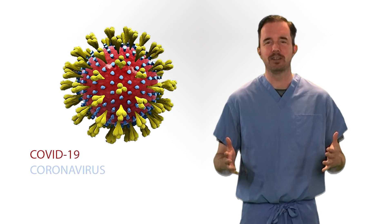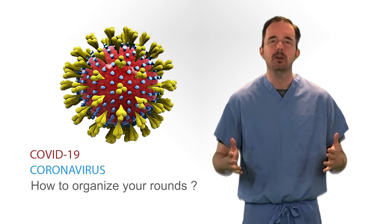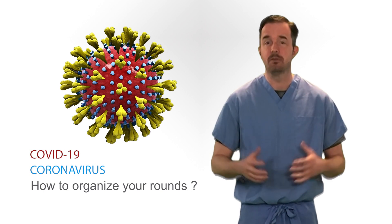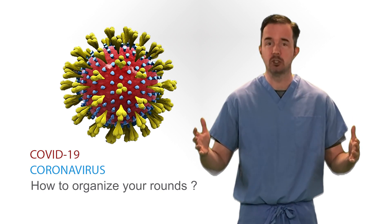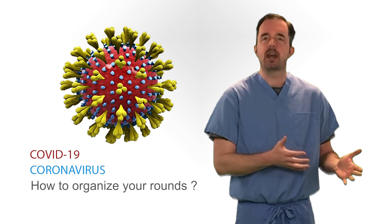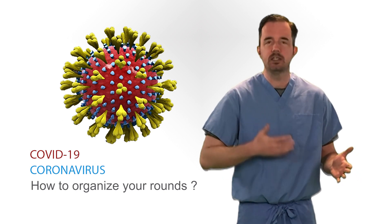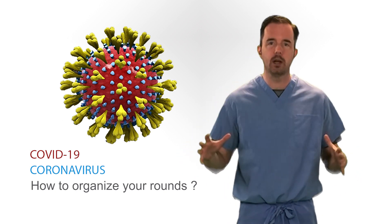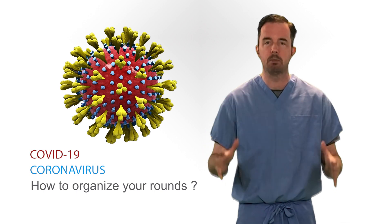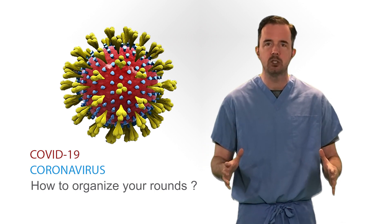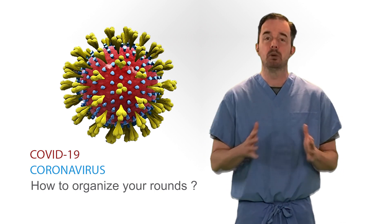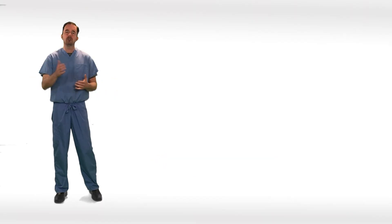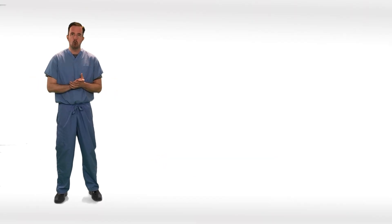Hey guys, welcome back to the Critical Care Survival Guide. One of the things that's changed in the last few weeks with COVID-19 is the volume of patients. A couple weeks ago we just had a handful, and as I was starting to see more and more patients come in, I thought to myself: how am I going to organize my thinking and planning so that I can be efficient, particularly as the volumes go up? Here are some strategies that I've discovered that really seem to work for me.